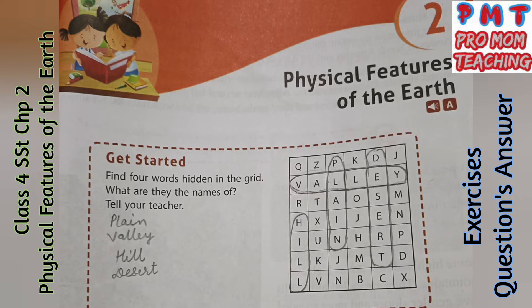Find four words hidden in the grid. The hidden words are Plain, Valley, Hill, and Desert.